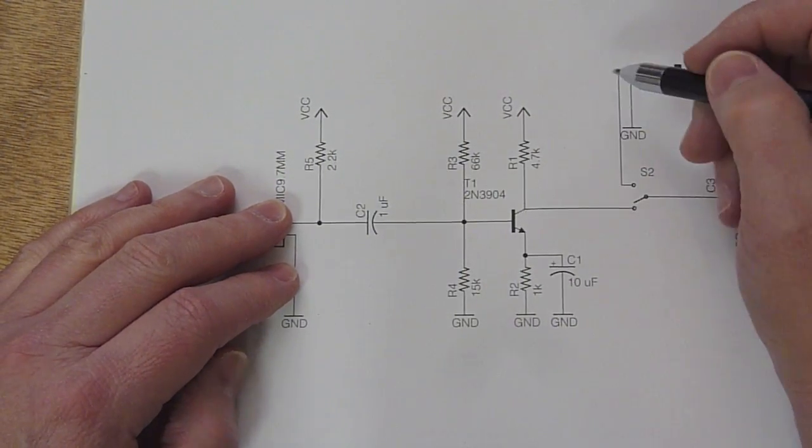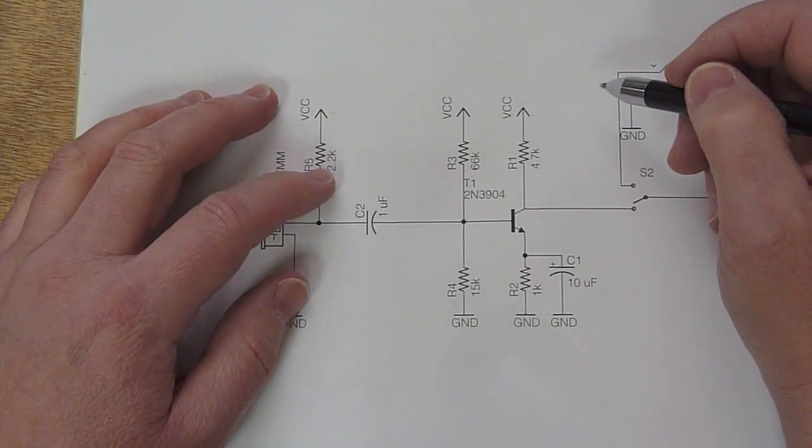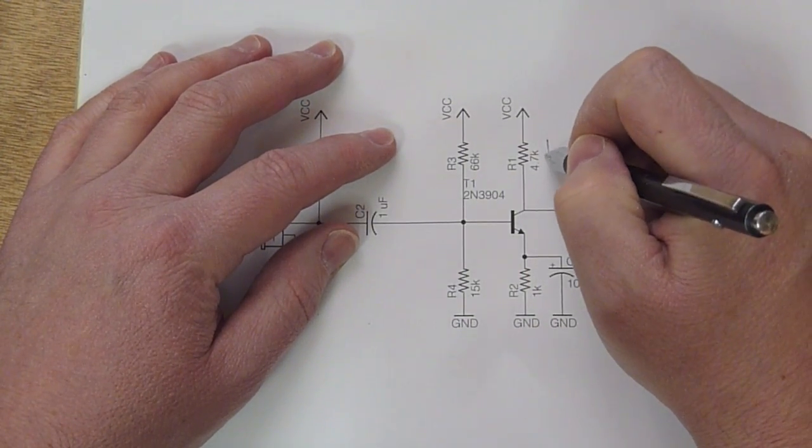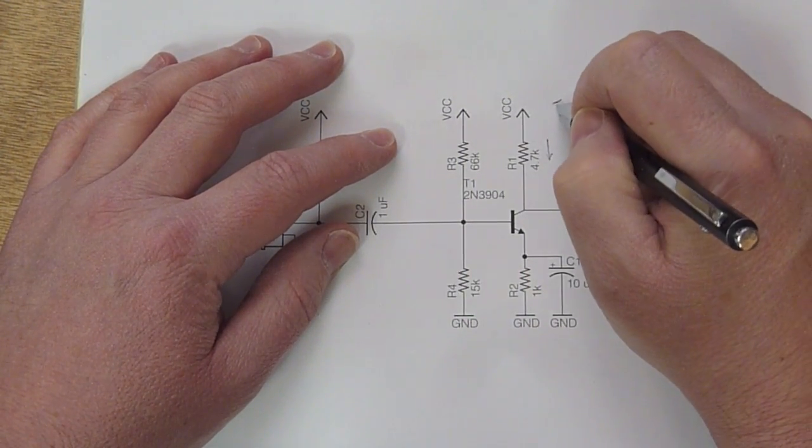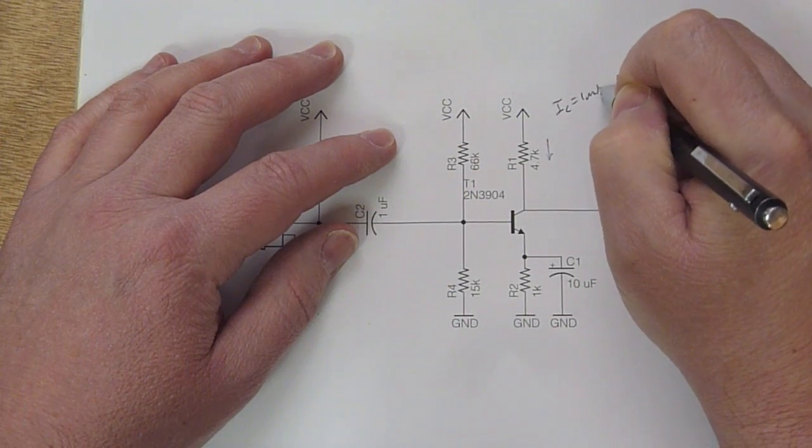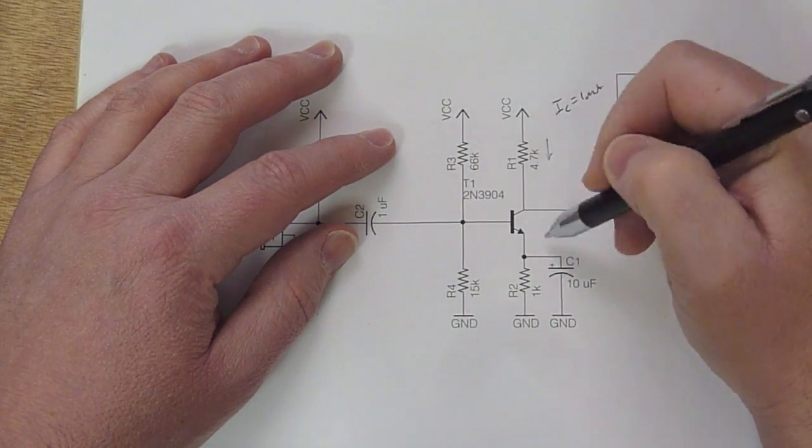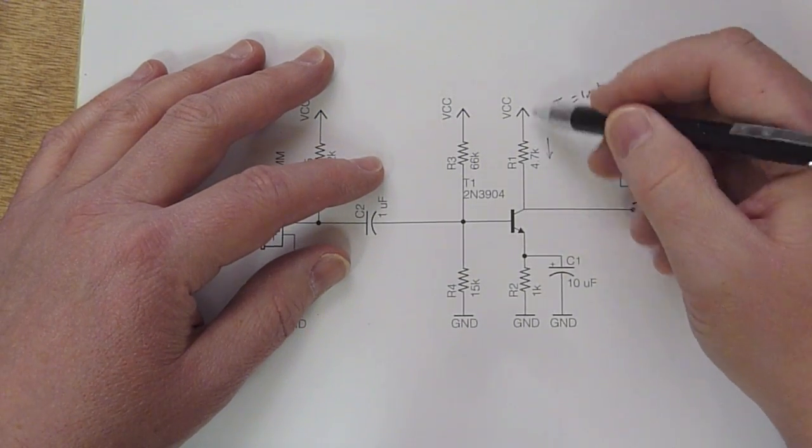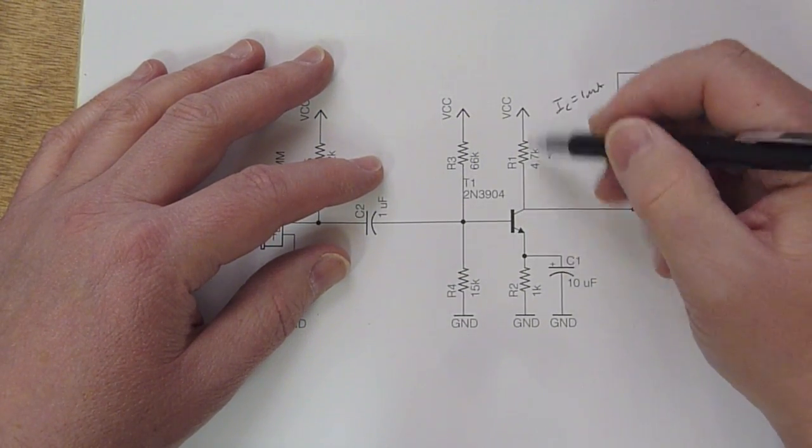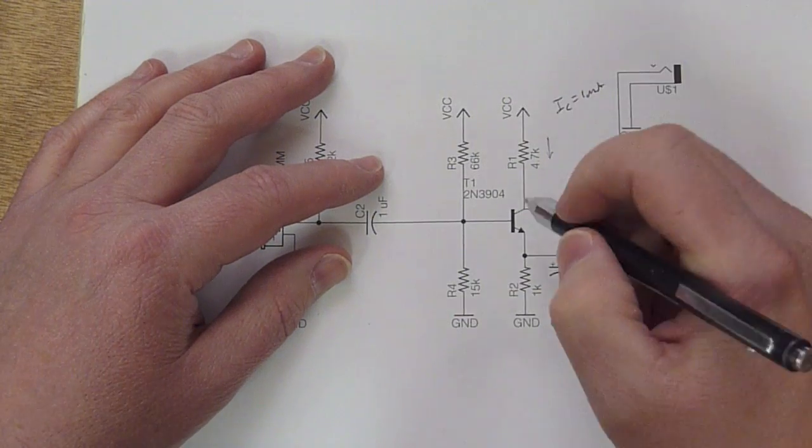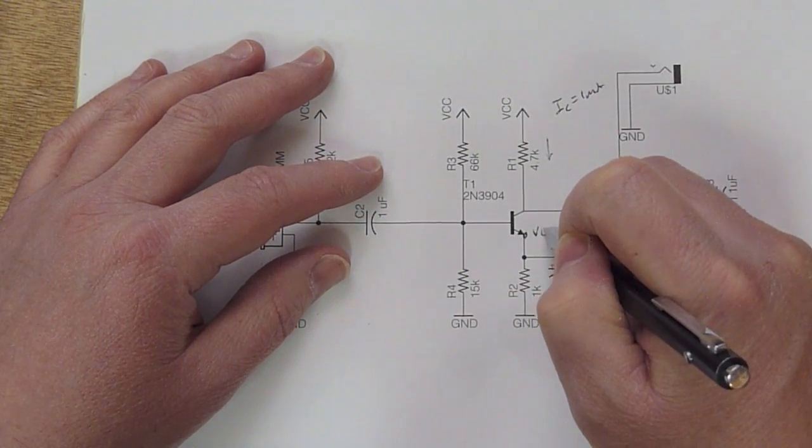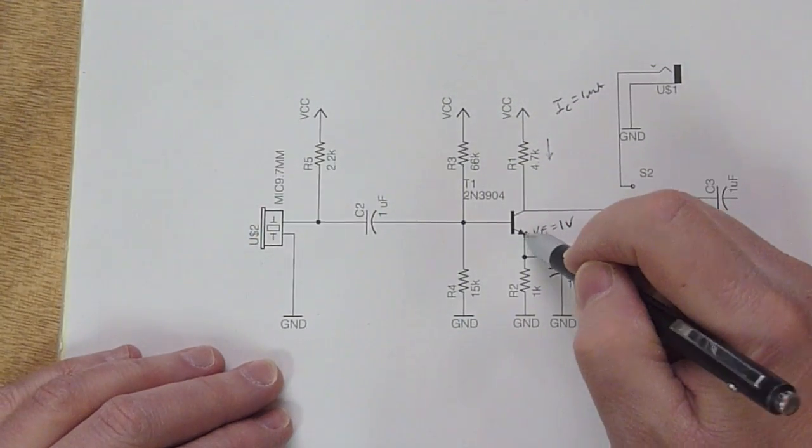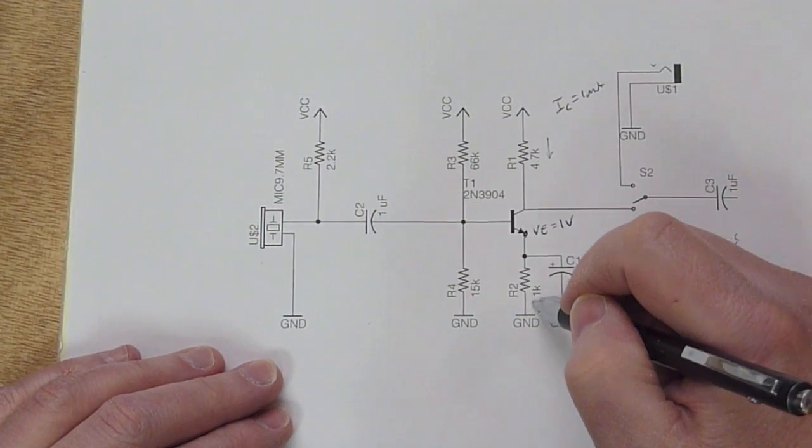So what we want to do is we want to design a common emitter amplifier. We're going to make some decisions to get started, and the first decision we're going to make is that IC is 1 milliamp. So this is a class A amplifier. There's always current getting burned up by the amplifier, even when there's no signal. So we just chose that the quiescent current flowing through this thing is going to be 1 milliamp. And I'm also going to choose that VE equals 1 volt. So immediately, now that we know that this is going to be at 1 volt, that sets this resistor at 1K.